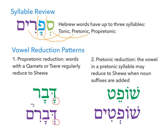Let's look at the example on the other side of the page: shofet — our word for a judge, like the Book of Judges. The plural is shoftim. Here we're talking about pre-tonic reduction. The vowel in that pre-tonic position may reduce to a sheva when suffixes are added. We take shofet, and this becomes shoftim — we're adding that long ending and getting a reduction to sheva. So a similar type of reduction, again involving sheva, but here in the pre-tonic position.